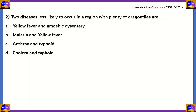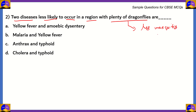Next question: two diseases less likely to occur in a region with plenty of dragonflies are: (A) yellow fever and amoebic dysentery; (B) malaria and yellow fever; (C) anthrax and typhoid; (D) cholera and typhoid. You can easily solve this by reasoning: plenty of dragonflies means fewer mosquitoes, and fewer mosquitoes means fewer mosquito-borne disease cases. Therefore, the correct option is B — malaria and yellow fever — because both use mosquitoes as vectors.